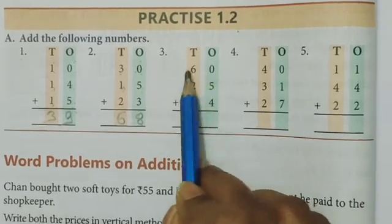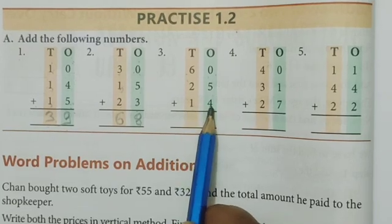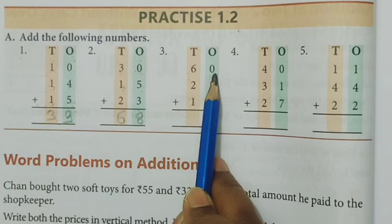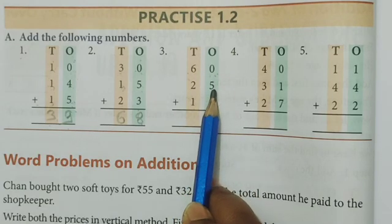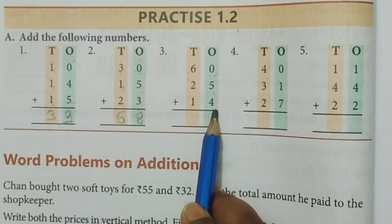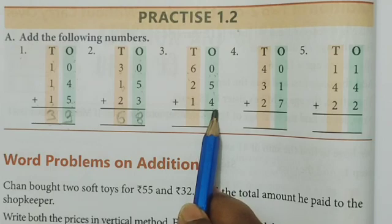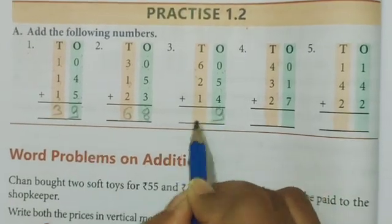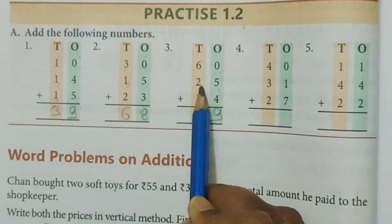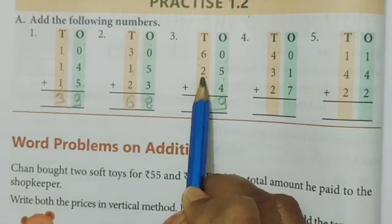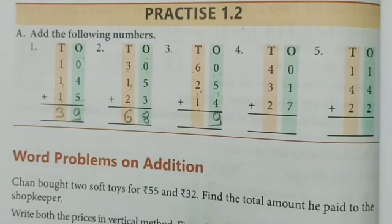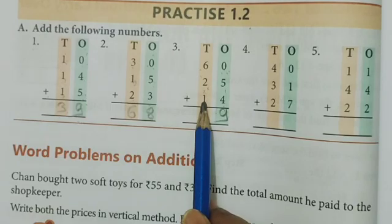Now third numbers, read this number: 60, 25, and 14. Which column we will first solve? Ones column. 0 plus 5, 5. 5 plus 4, 9. 6 plus 2, 8. 8 plus 1, 9.